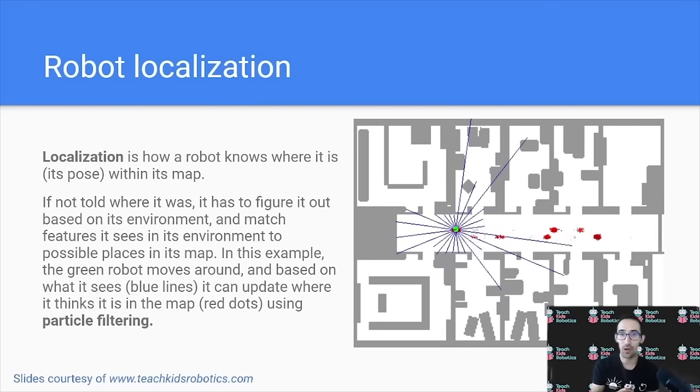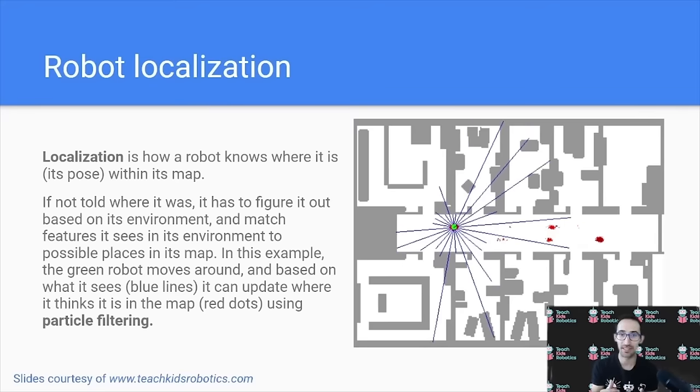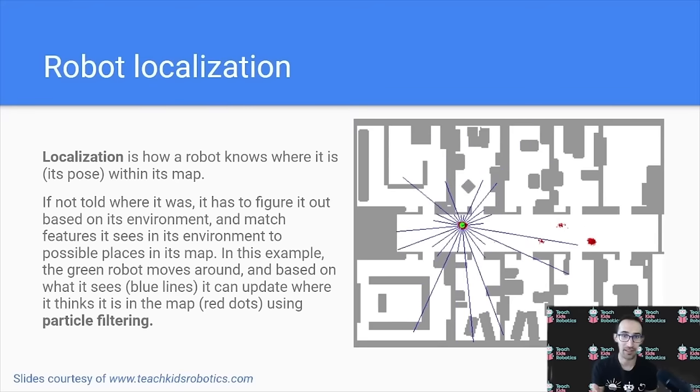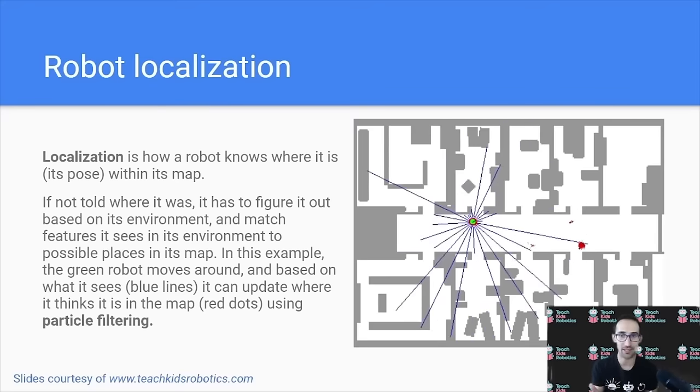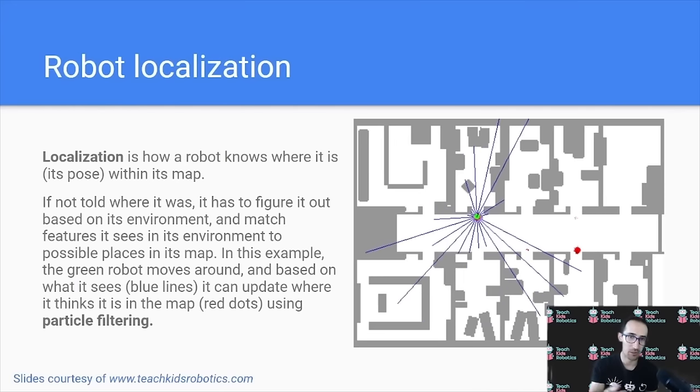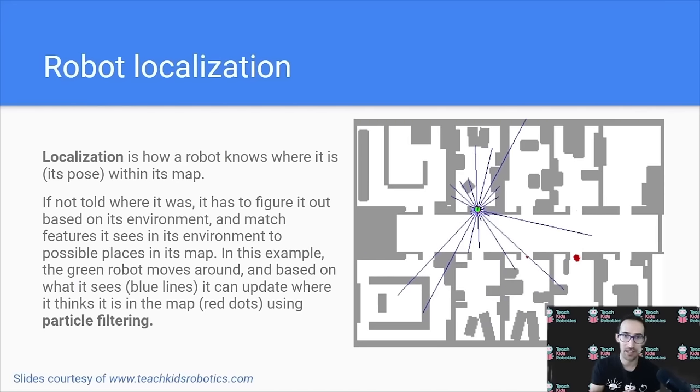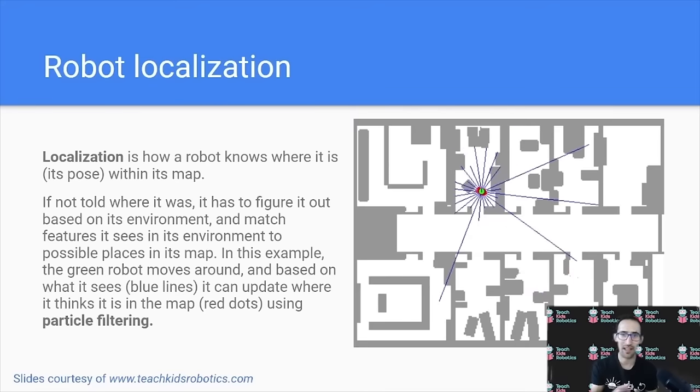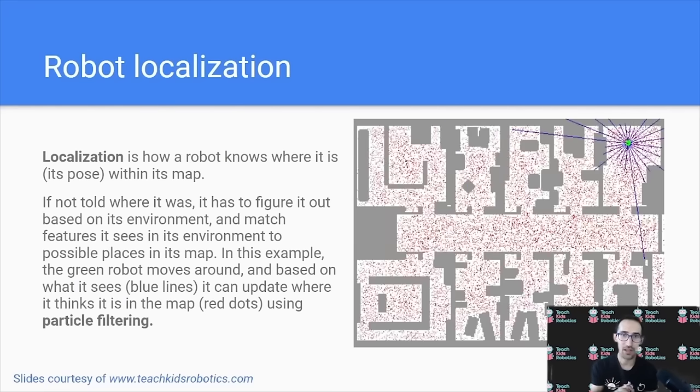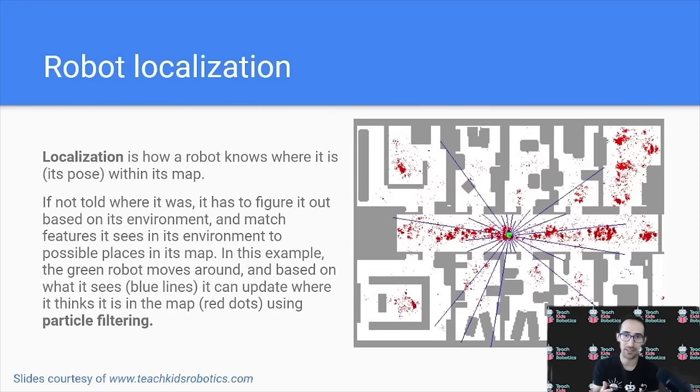In the same way, a robot also, when it initially begins trying to identify where it is within its map, will look around using its sensors such as a lidar, such as the blue laser scans in this example GIF above me. And as it moves around, it sees what kind of features are in its environment, such as open hallways or a closed set of rooms with potentially chairs or tables. And as it moves around, it can have a better idea or a greater probability of where it is based on what it sees around it.